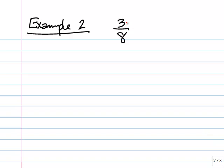Example number 2, we have 3 eighths. We want to convert that into a decimal. So we have our numerator, 3, which is our dividend. And then our 8, our denominator, will become our divisor.